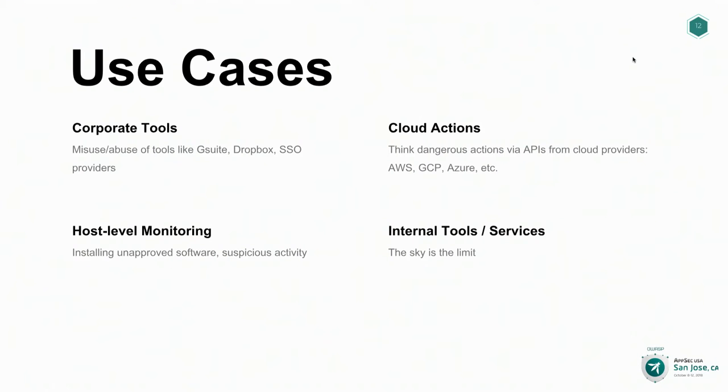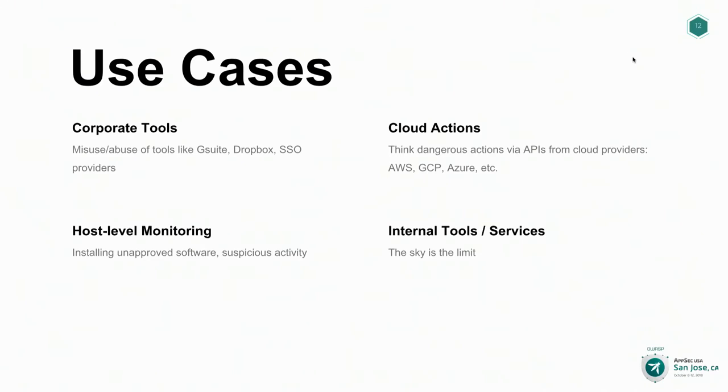There are a lot of different use cases for a bot like this — basically any alert associated with an employee can be tied into a system like this. Corporate productivity tools — things like G Suite, Dropbox, single sign-on providers — every employee uses these day to day, and there could be sensitive actions that happen. So monitoring and sending alerts is very useful there. One example from the previous slides was that bulk data exfiltration type incident.